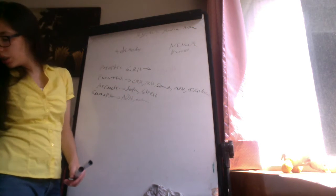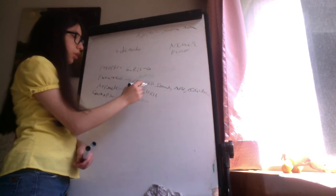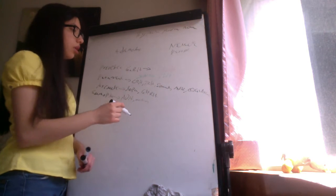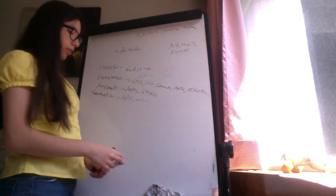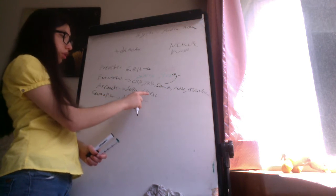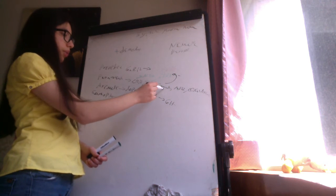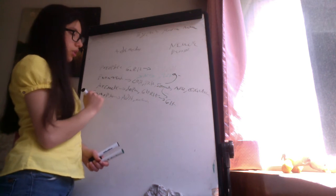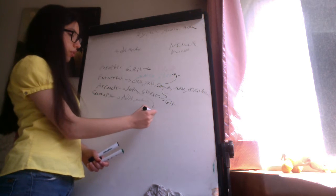Corticotropin-releasing hormone stimulates the pituitary gland to produce ACTH. Thyrotropin-releasing hormone stimulates the pituitary gland to produce TSH. Somatostatin inhibits the release of TSH. Growth hormone-releasing hormone stimulates the pituitary gland to produce growth hormone, and somatostatin also inhibits the release of growth hormone.